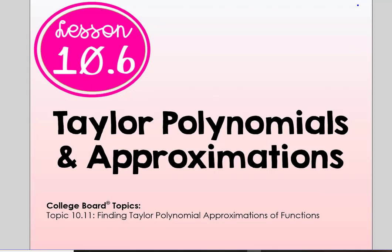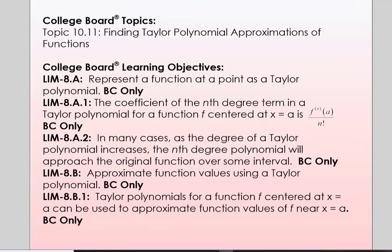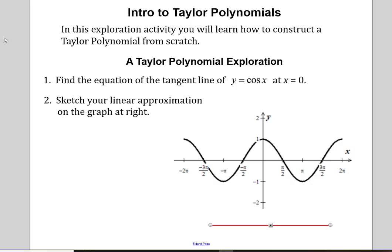In lesson six today, this is an introduction to the lesson. We're going to do an exploration on creating Taylor polynomials and approximations, and we're going to use the function y equals cosine of x centered at x equals zero. The first thing we want to do is find the equation of the tangent line for y equals cosine of x at zero.